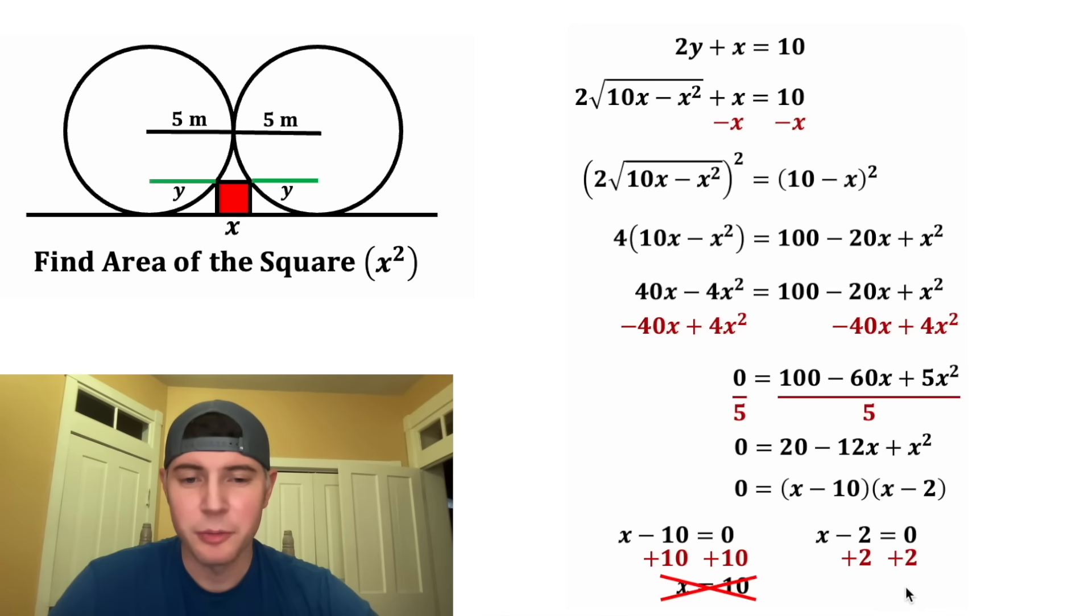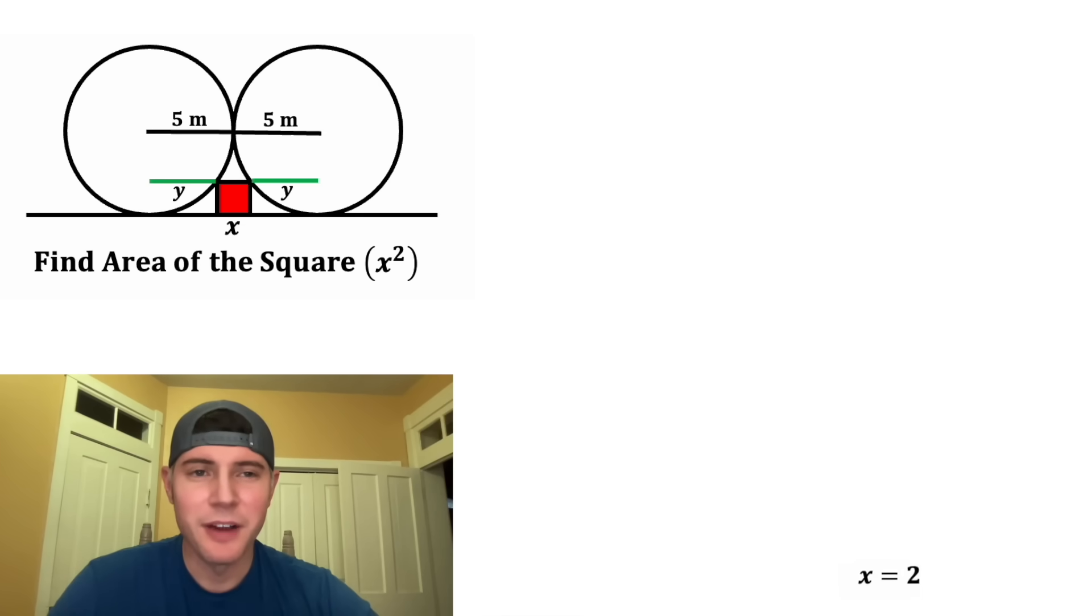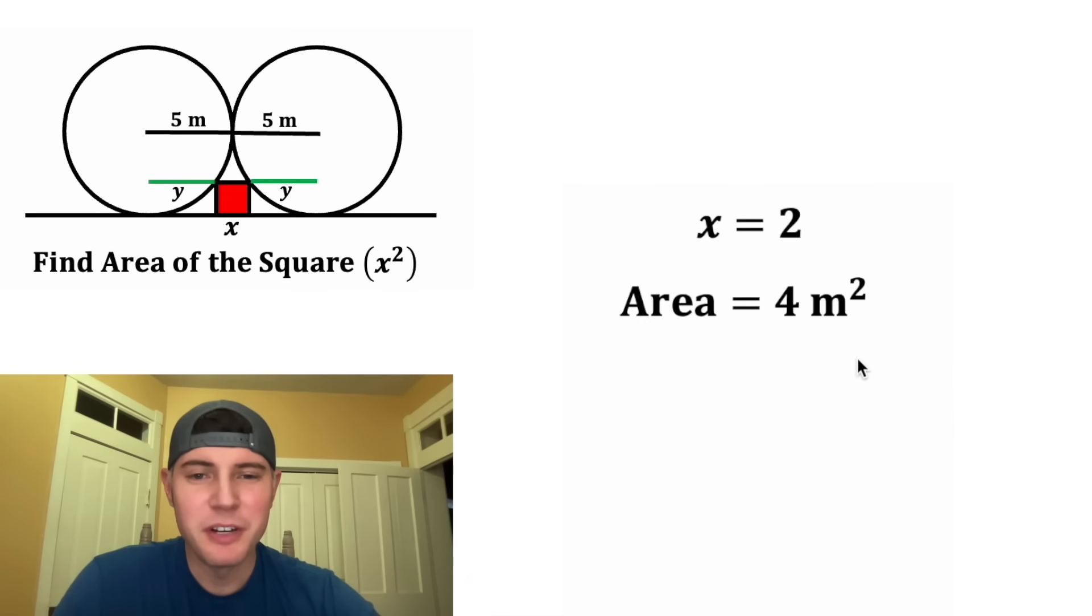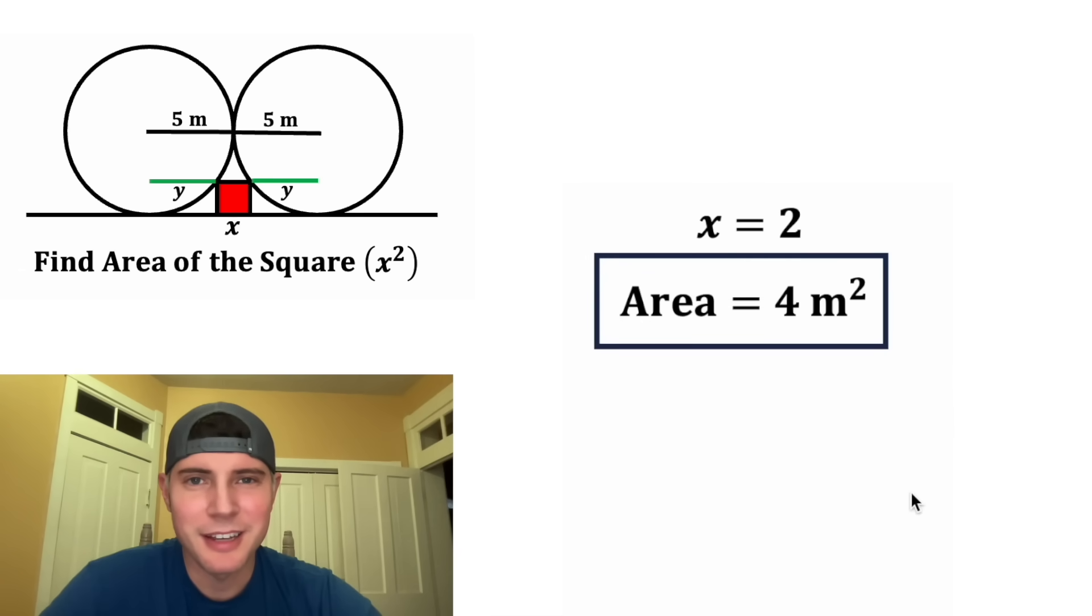And then for X minus two equals zero, we can add two to both sides, and we get X equals two. This one is a valid solution. So now that we know X equals two, the area of our square is going to be equal to two squared, which is four. Let's give it a label of meters squared and put a box around it. How exciting.